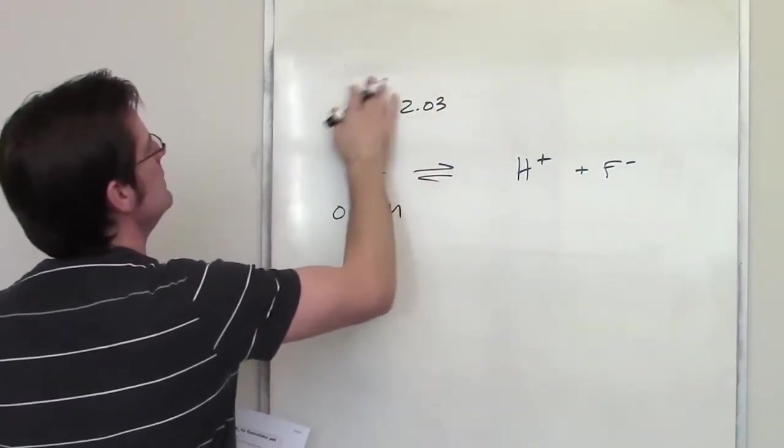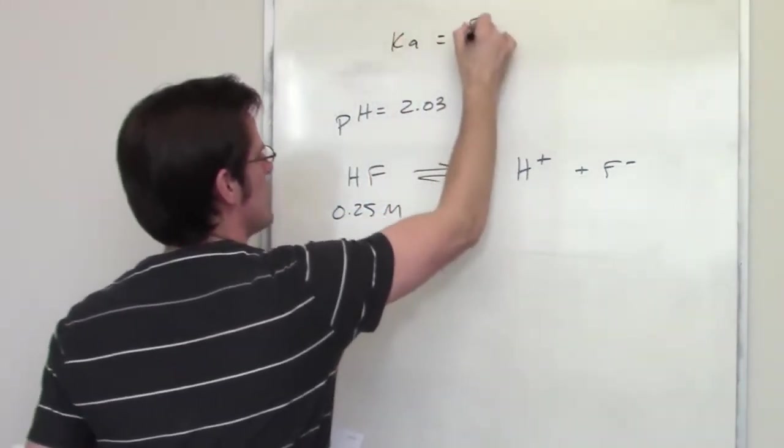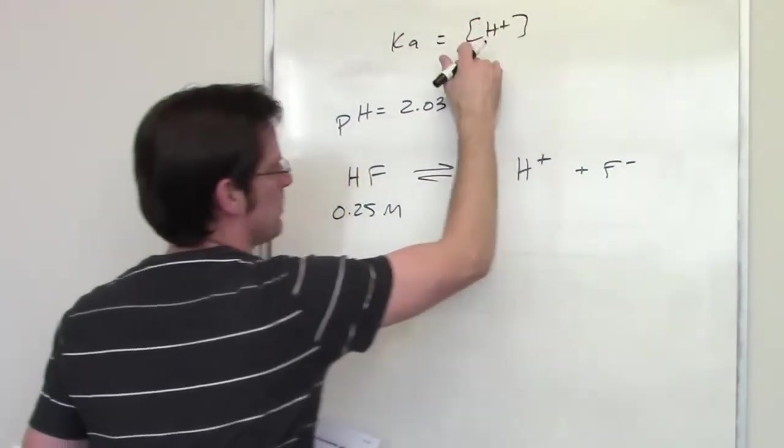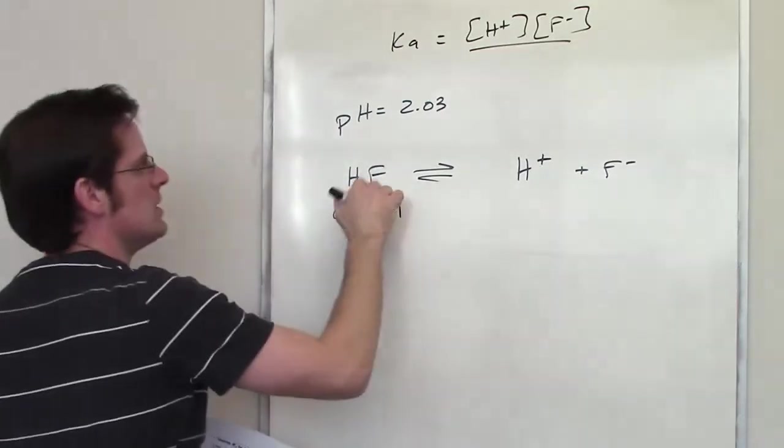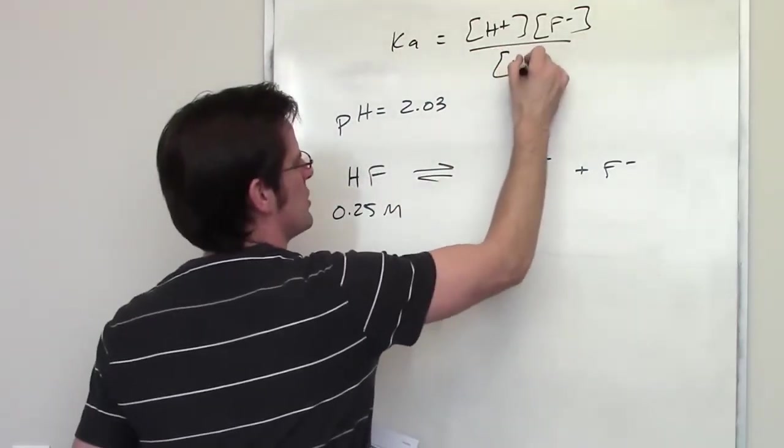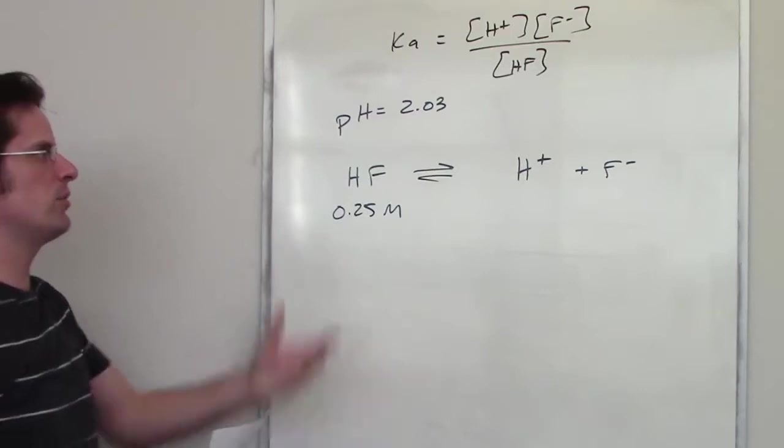Ka is going to be equal to the concentration or equilibrium concentration of H+ multiplied by the equilibrium concentration of F- divided by the equilibrium concentration of HF. That's what Ka is going to be equal to.